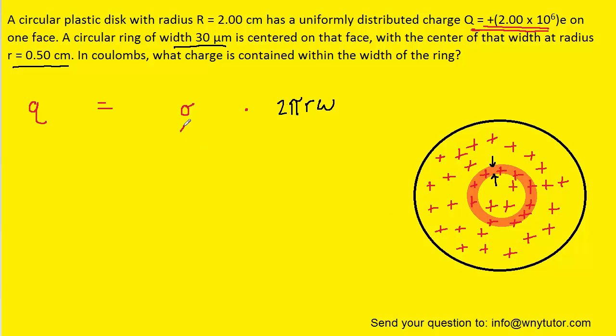And so, sigma can be calculated for the entire plastic disc. But again, because the circular ring is located within that circular plastic disc, we can use that same surface charge density. Now surface charge density would simply be the total charge present on the circular plastic disc divided by the entire area of that circular plastic disc.